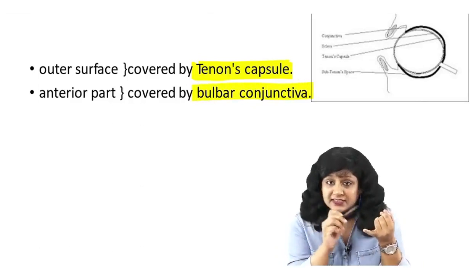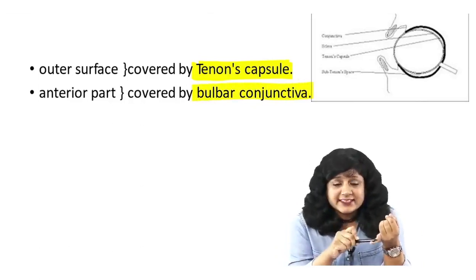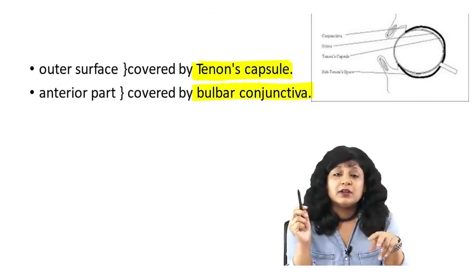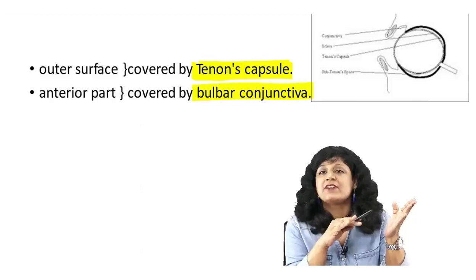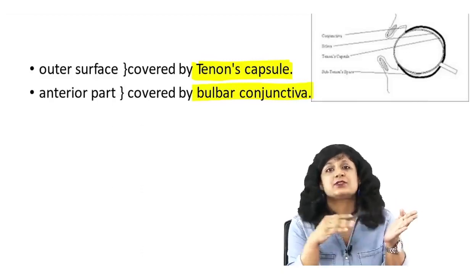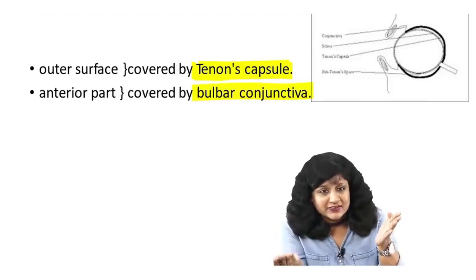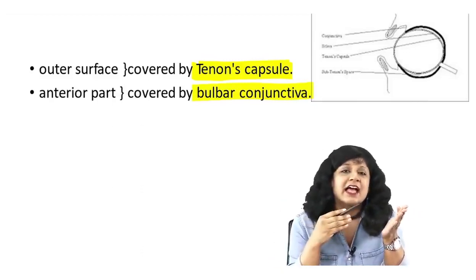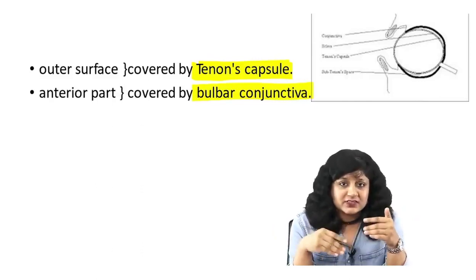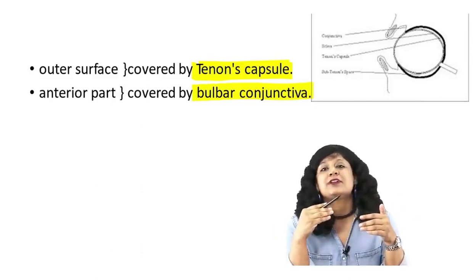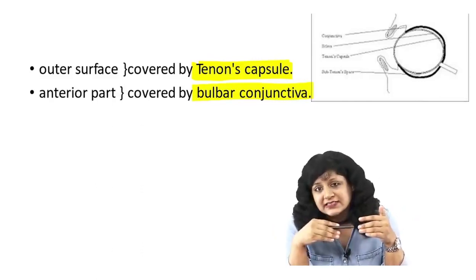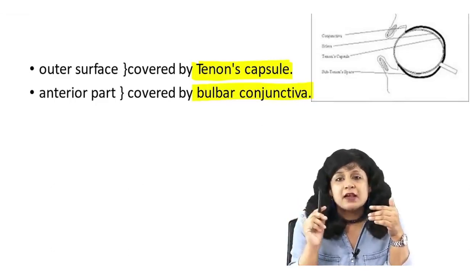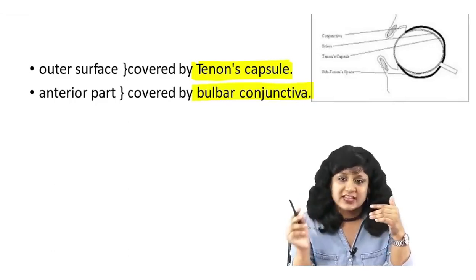So to summarize what is sclera: it is part of the coats of the eyeball. It forms the posterior five-sixth division, and its surfaces are covered — the outer surface by Tenon's capsule and the anterior surface by the bulbar conjunctiva.